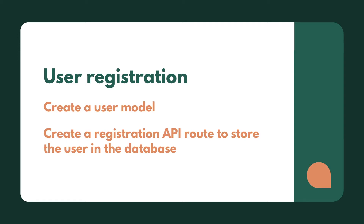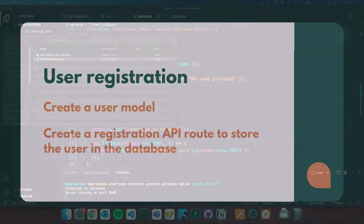Hi guys, welcome back to another lesson. In this lesson we're going to take a look at user registration. We're first going to create a user model, and after creating the user model we're then going to create a registration API route so we can store our user in the database. So we're going to switch straight back over to our code.